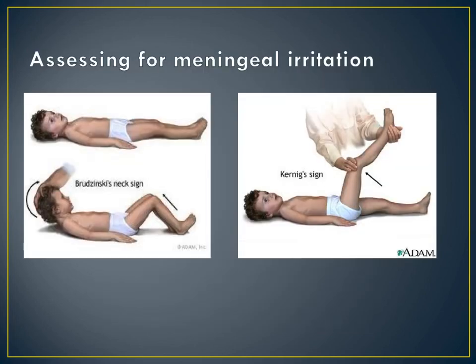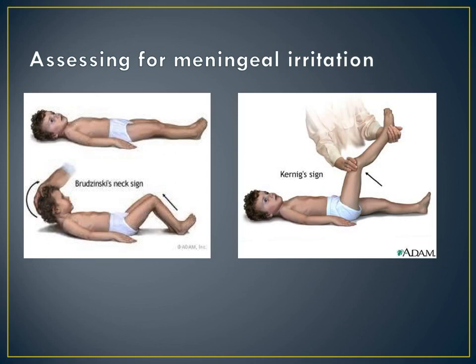We do study meningitis. A couple of assessment techniques you need to be aware of that suggest irritation of the meninges: Brudzinski's sign is when a patient you suspect might have meningitis — you actually flex the patient's neck forward, and this causes flexion at the patient's hips and knees because it's painful, so they draw up their knees. Kernig's sign is where the patient's lying down and you flex the patient's hip at a 90-degree angle — this causes pain at the knee, and the patient is unable to straighten their knee because of the meningeal irritation.